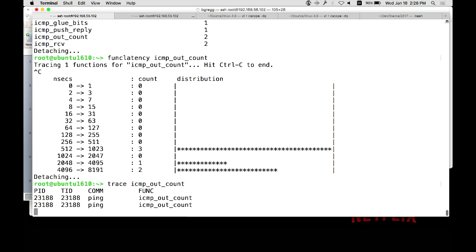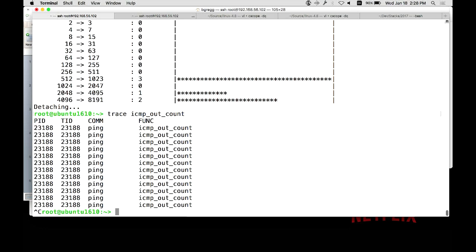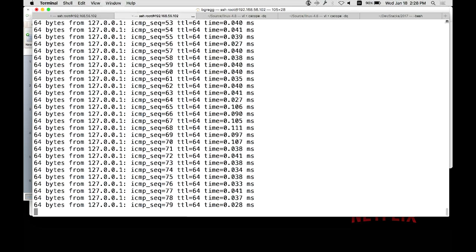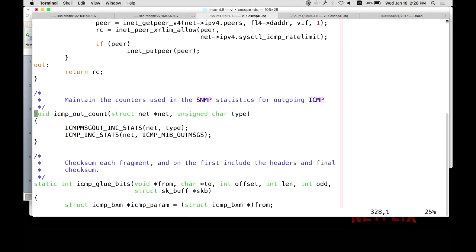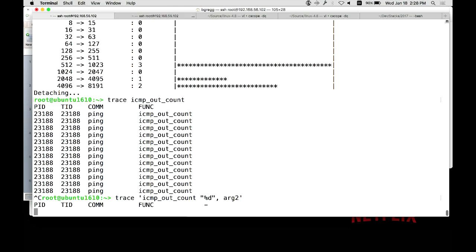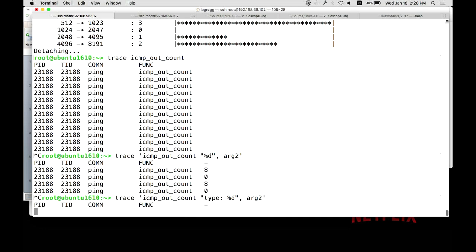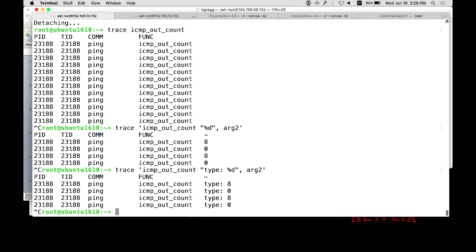So here's a tool - this one's not written by me, this is written by Sasha Goldstein, another BCC contributor - and it is a multi-tool that can do many things. I can trace that that function was called. In fact, I'll show you the function. Here it is in the kernel source: icmp_out_count. The first argument is a struct net and the second argument is a type. With this tool I can then say print out the second argument, which was the type, and I can decorate that.